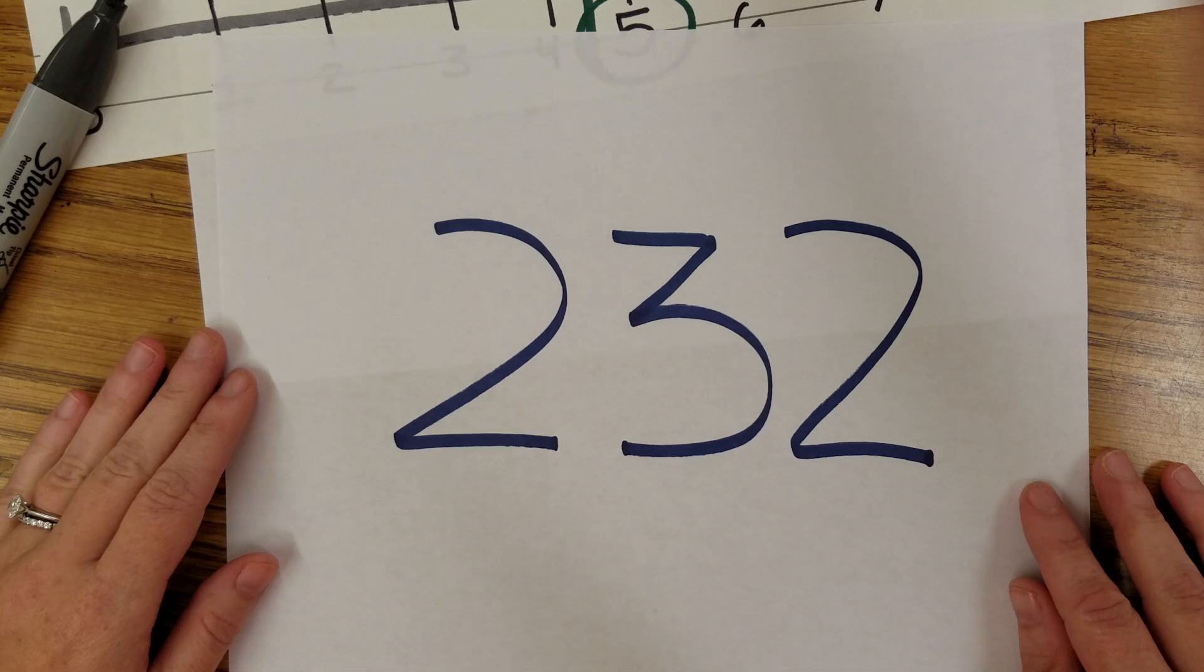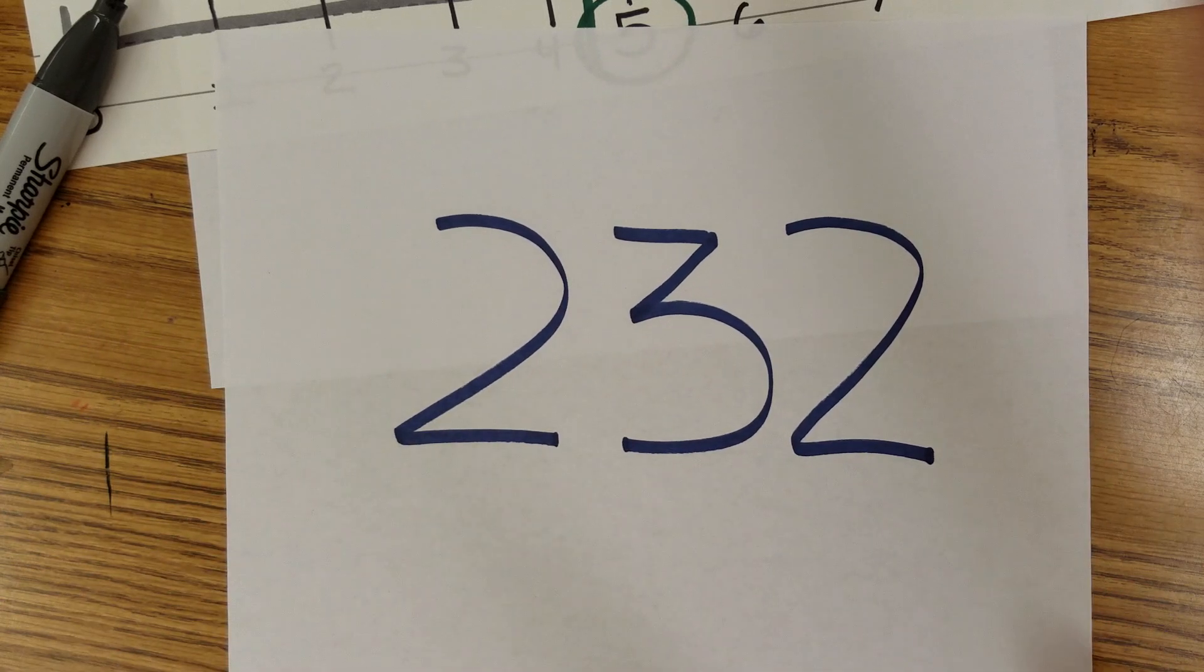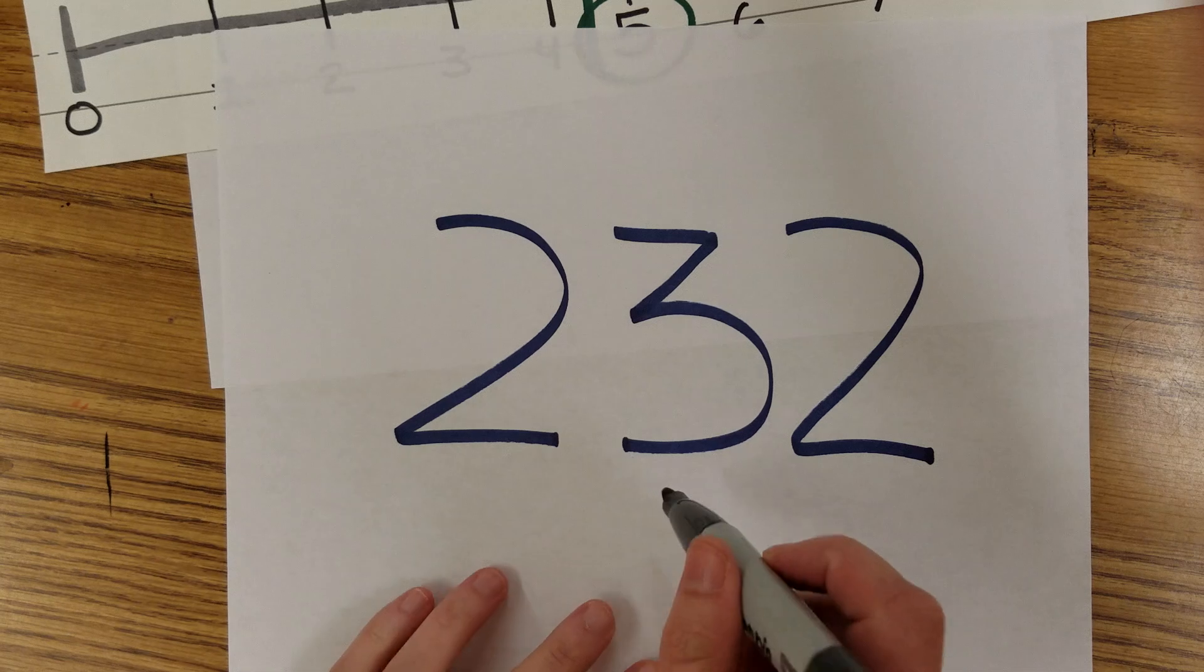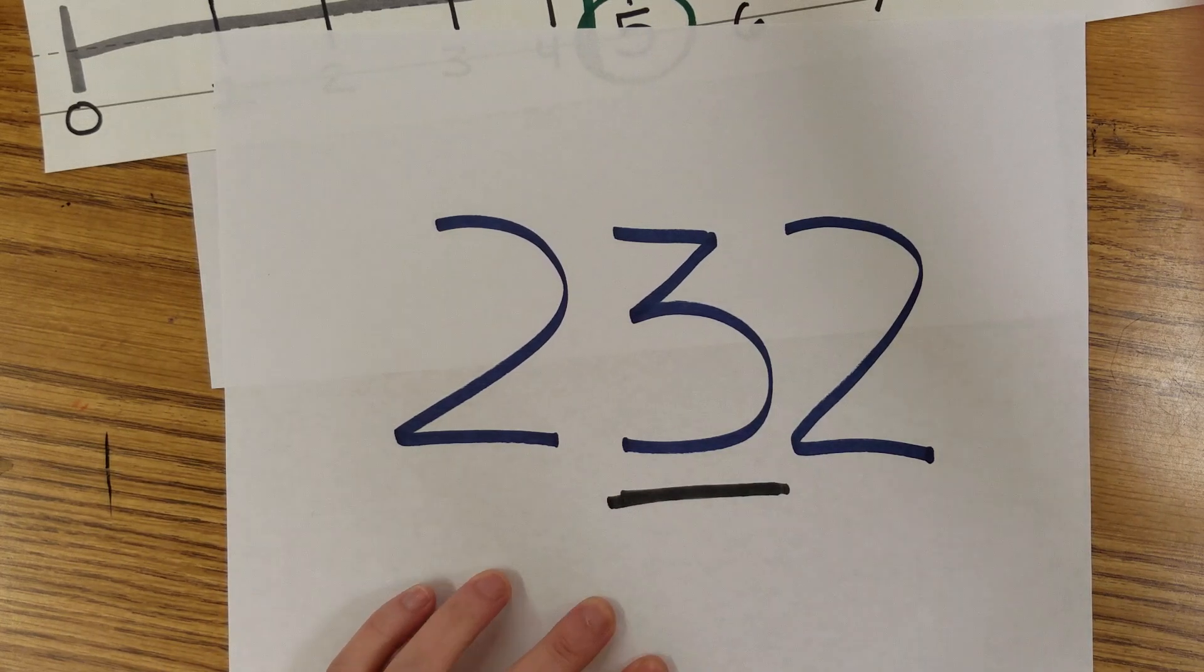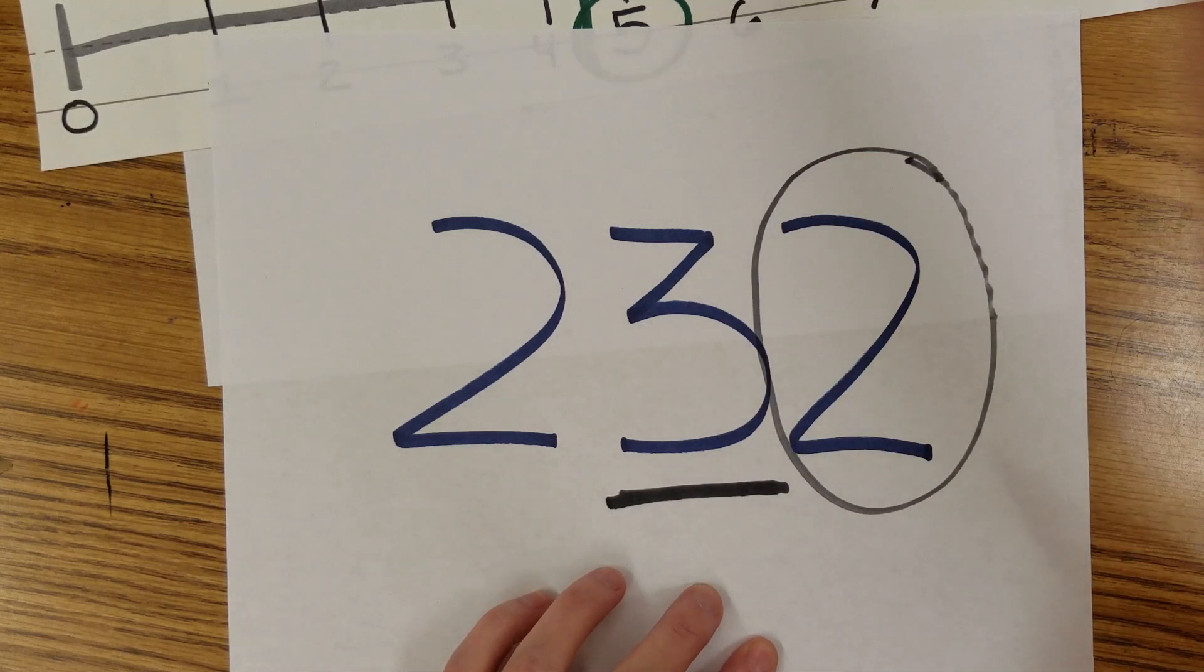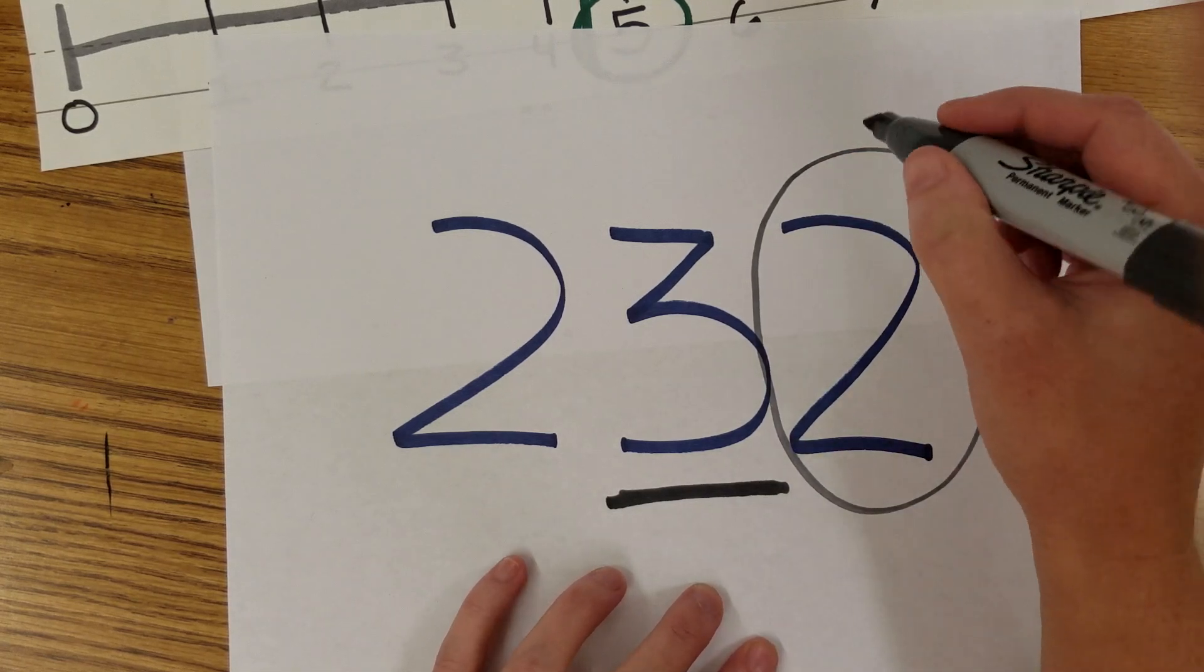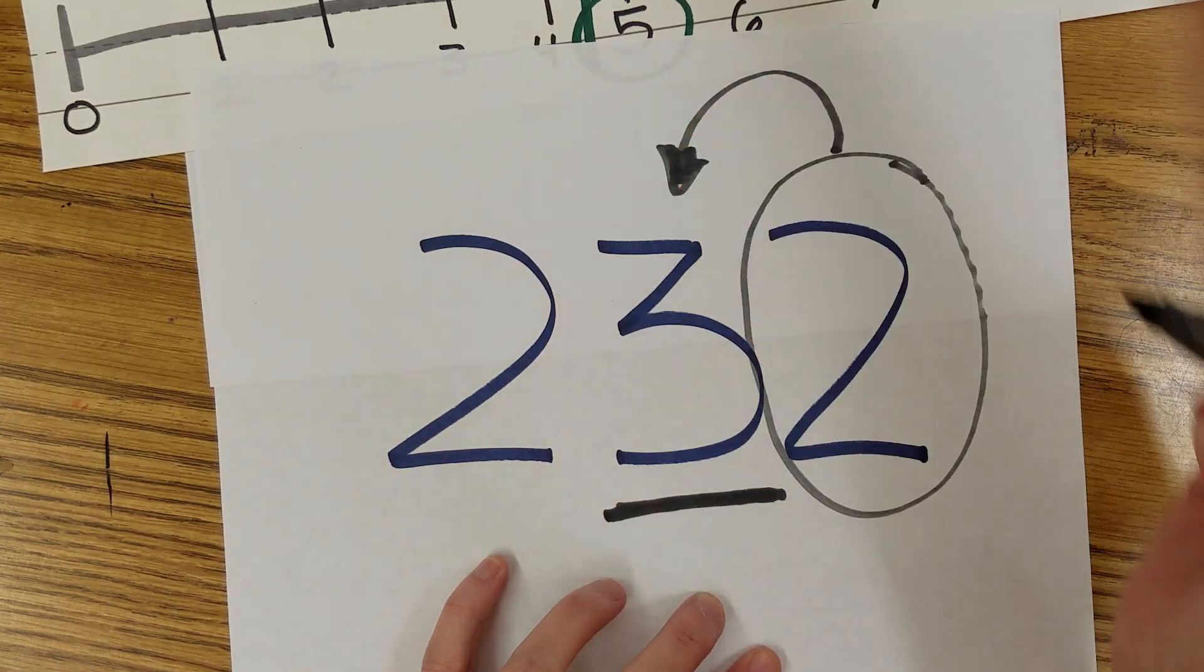This one gets a little trickier when we're looking at a three-digit number, but we're still saying round to the nearest ten. So again, you need to look at your ten place value. The three is in the tens. But the digit in your ones place value, this two, is going to be the boss. That's going to tell the three what to do.